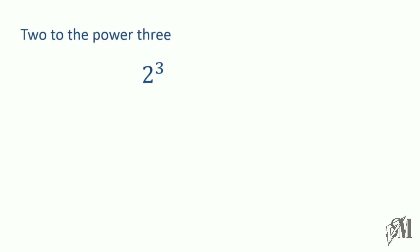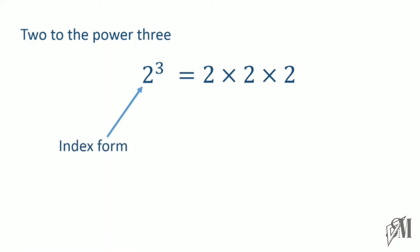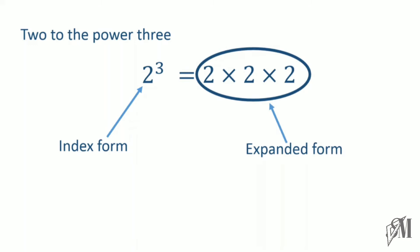Here you see a number written in index notation. It can be expanded as 2 x 2 x 2, that is 2 multiplied 3 times. So here 2 to the power 3 is called the index form, while 2 x 2 x 2 is called the expanded form.